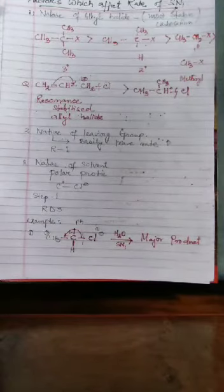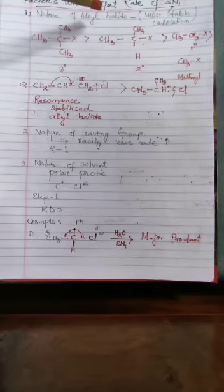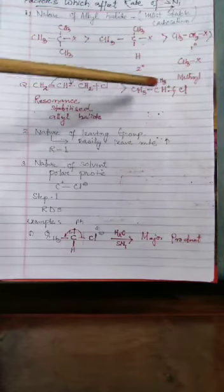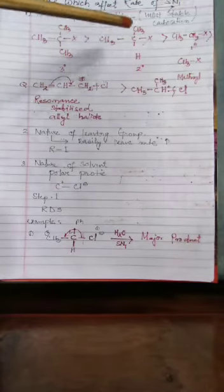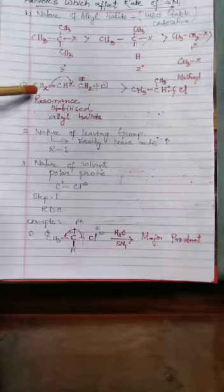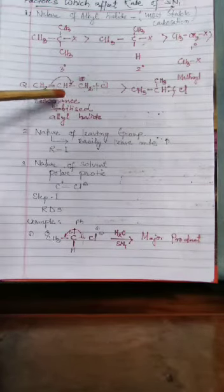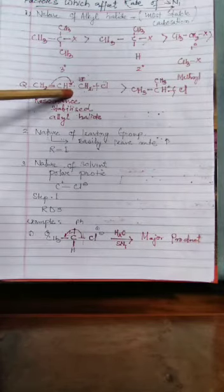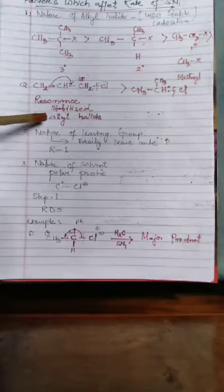Now let's do the factors which affect the rate of SN1. Factor one: nature of alkyl halide — that is, the most stable carbocation. The stability order is: tertiary > secondary > primary > methyl halide. So tertiary will be most stable. An example: CH2=CH-CH2Cl (allyl chloride / propyl chloride). Here a bond breaks and is given to the next, forming a resonance-stabilized carbocation — that is a resonance-stabilized allyl cation.